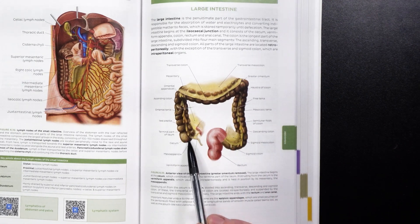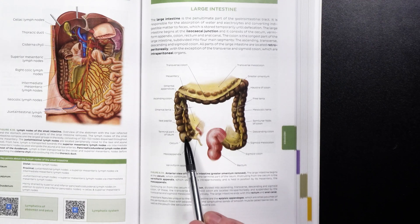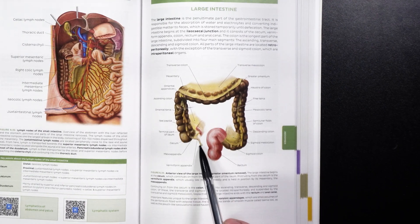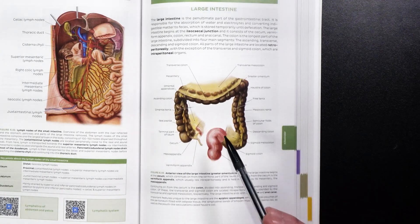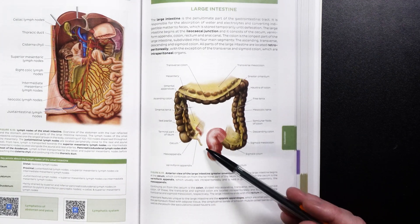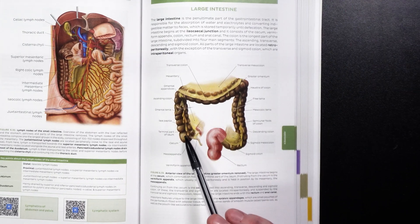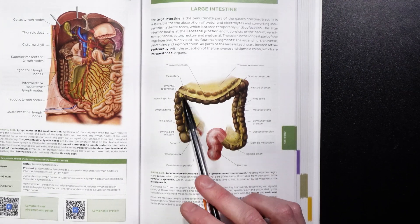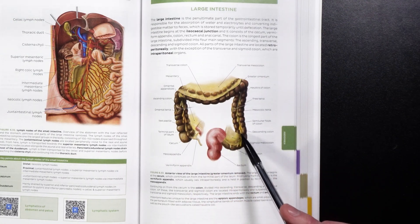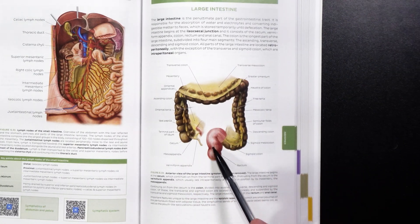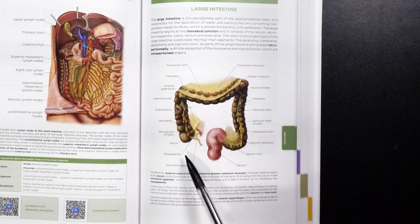We have the cecum, which is this blind-ended pouch — the first section of the large intestine. Hanging off of it is the infamous vermiform appendix. Vermiform means worm-like, and this does indeed look like a worm. So this is the beginning of our large intestine. From there we go to the ascending colon, transverse colon, descending colon, sigmoid colon, and then the rectum and the anus. Everything I just mentioned is part of the large intestine.